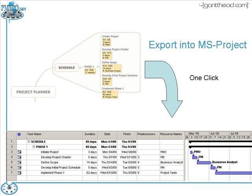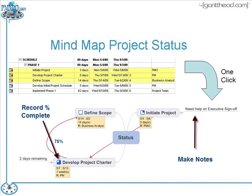Another nice feature is you can use a mind map to talk about your specific project status — not just for presenting to executives or stakeholders, but also when facilitating a project schedule review with your team to get updates on key tasks and understand where the team is having issues. One nice feature is you can highlight a set of tasks — shown here in yellow — and with one click export that into a mind map.